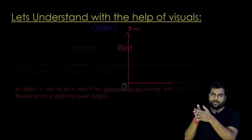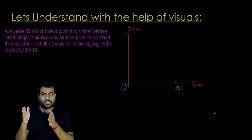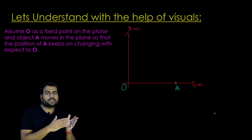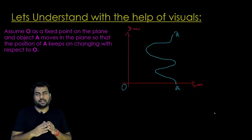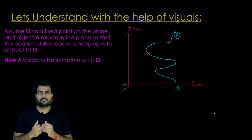Let us understand with the help of a visual. Consider O as a point fixed on a plane. An object A moves on the plane so that the position of A keeps on changing with respect to O. Then A is said to be in motion with respect to O. Alright, so this gives us the understanding how the position of the object changes with respect to the origin.